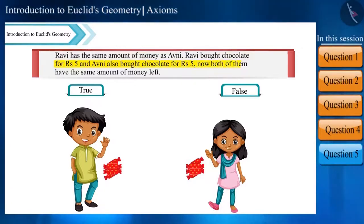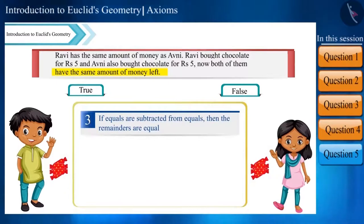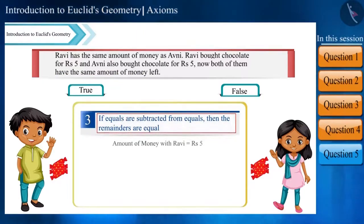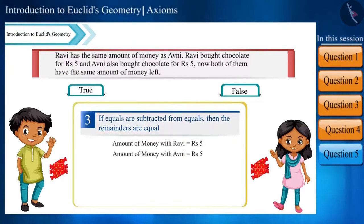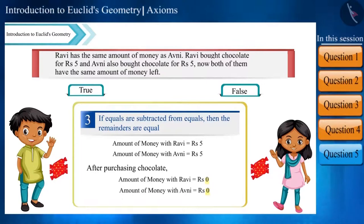Euclid's third axiom says that if equals are subtracted from equals, then the remainders are equal. Ravi and Avni had equal amounts of money and spent equal amounts. Therefore, the remaining amount left with them will also be equal, so this statement is true.